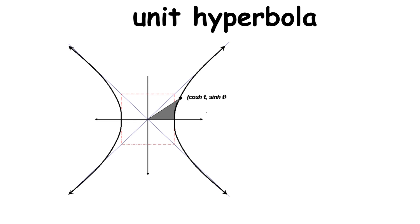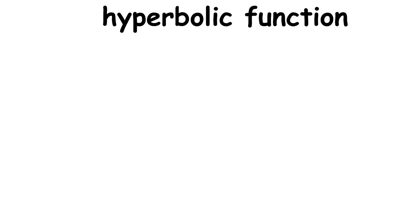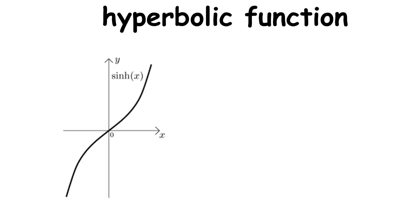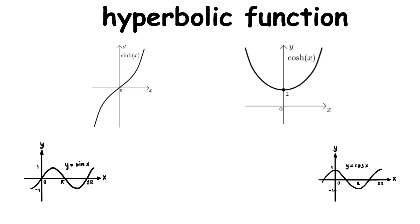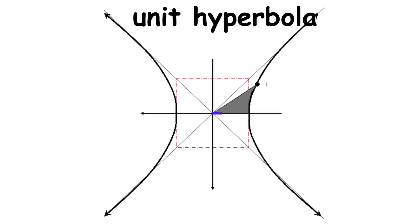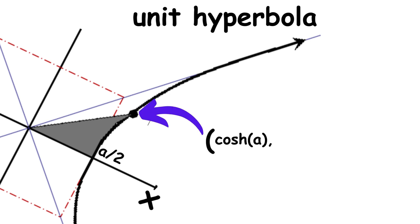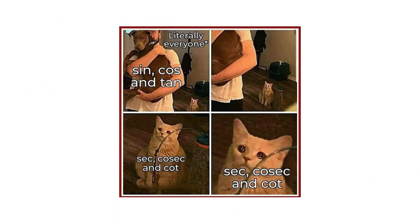The unit hyperbola is given by x squared minus y squared equals 1, and it is the basis of the hyperbolic functions: hyperbolic sine (sinh) and hyperbolic cosine (cosh), which are analogous to the ordinary trigonometric functions. If you draw a line segment from the center to a point on the right half of the unit hyperbola, the signed area bounded by the segment, the hyperbola, and the x-axis is denoted a divided by 2. Signed area means area below the x-axis counts as negative. The point where the segment hits the unit hyperbola has coordinates (cosh a, sinh a).